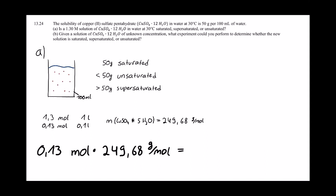If we multiply 0.13 moles and 249.68 grams per mole, we get the amount of copper sulfate pentahydrate dissolved in 100 milliliters of a 1.3 M solution in grams, which is 32.5 grams. Since 32.5 is less than 50, our solution is unsaturated.